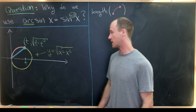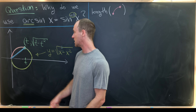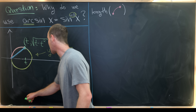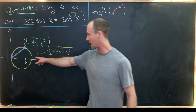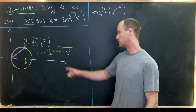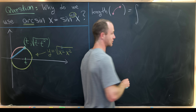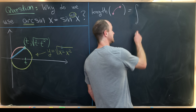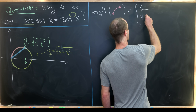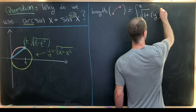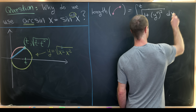Let's find the length of this arc starting at the origin and ending at the coordinate (t, sqrt(t - t²)). That endpoint comes from the equation of the top half of the circle: y = sqrt(x - x²). The standard arc length formula is the integral from 0 to t of the square root of 1 plus the derivative of our curve squared, dx.